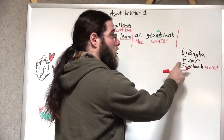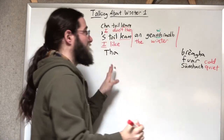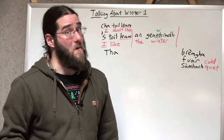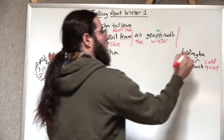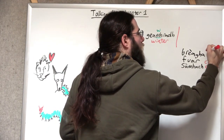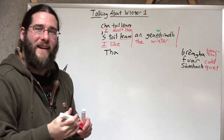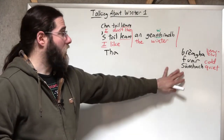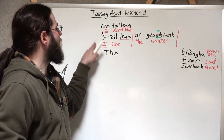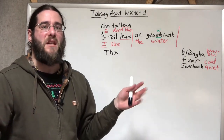Haan gyaurig fuur — winter is cold. If you're somewhere where there's cold winter, it is definitely fuur. Haan gyaurig bria — beautiful. So this is how we'd talk about an gyaurig in a very straightforward way, using some describing words. And we could also use our opinions: stolyum, chatolyum, gyaurig.